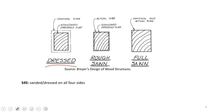You will also hear the term S4S, which refers to lumber that has been sanded or dressed on all four sides. The next type is rough sawn — lumber that has been seasoned but not dressed. It has lost a little area due to drying-related shrinkage, but it hasn't lost area due to sanding or planing. Thus, the difference between nominal and actual dimensions is much lower for rough sawn than for dressed lumber.